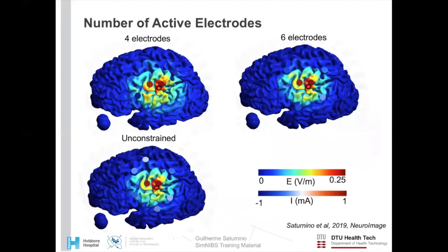One factor which we found not to be particularly important to obtain focal electric fields is the number of active electrodes. In this example, there are three optimization results with four, six and an unconstrained amount of active electrodes. We see some small gains in focality in going from four to six electrodes, for example, eliminating this side maximum over here. However, the difference between six and unconstrained, possibly over 60 electrodes, is very small.